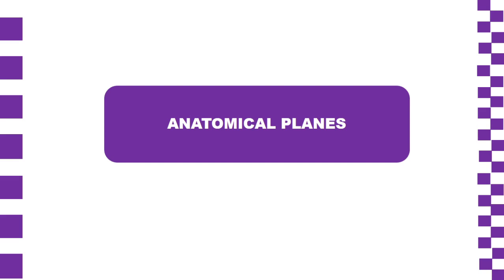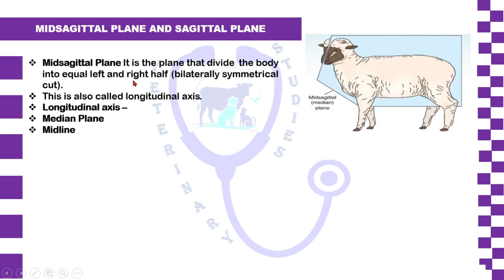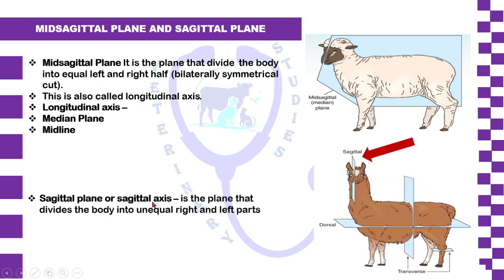Now, anatomical planes — mid-sagittal and sagittal plane. The mid-sagittal plane is a plane by which we can split or divide an animal into two equal left and right sides. It is also called the longitudinal axis, median plane, or midline. As seen in the picture, this plane splits an animal into two equal halves. The sagittal plane, by contrast, divides an animal into unequal left and right parts.